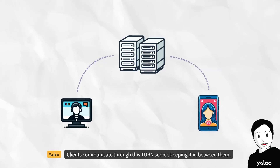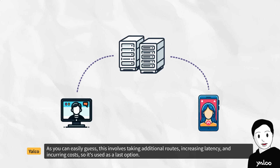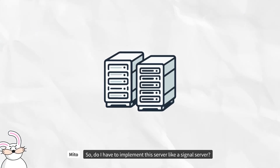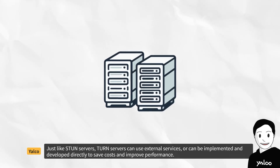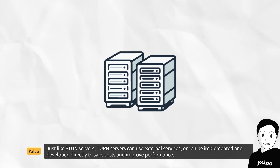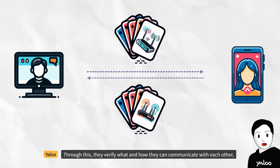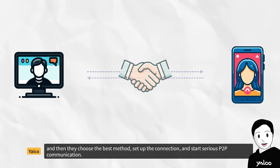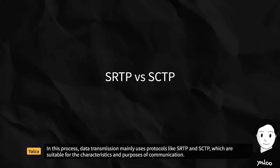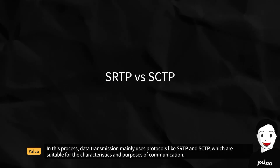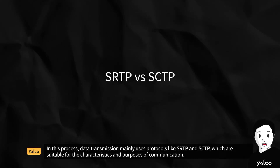Using a TURN server involves taking additional routes, increasing latency and incurring costs, so it's used as a last option. TURN servers, like STUN servers, can use external services or can be implemented directly to save costs and improve performance. Each client includes their available ICE candidate information in their SDP and sends it to the other party. Through this, they verify what and how they can communicate with each other, then choose the best method, set up the connection, and start P2P communication. In this process, data transmission mainly uses protocols like SRTP and SCTP, which are suitable for the characteristics and purposes of communication.